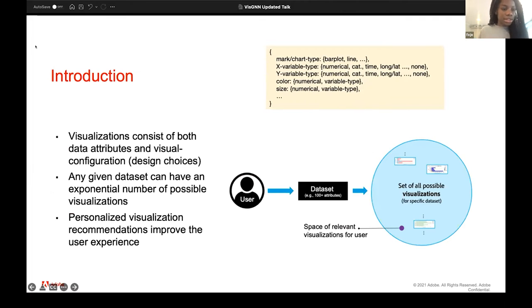So visualizations consist of both data attributes and visual configurations or design choices. In this top image, you can see examples of some of the design choices involved in many visualizations. You have chart types, which includes bar plots, line graphs, scatter plots, X and Y variable types, color, size, et cetera. These are just some of the examples of what these design choices are.